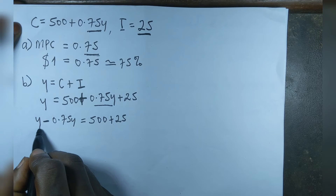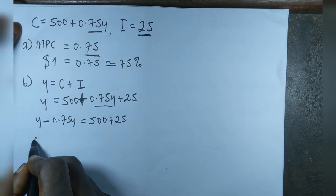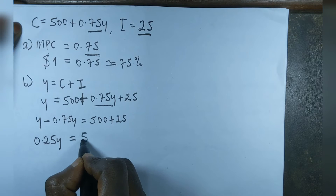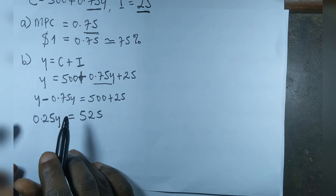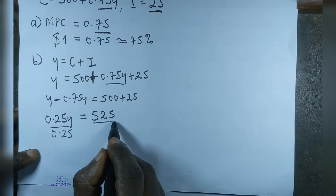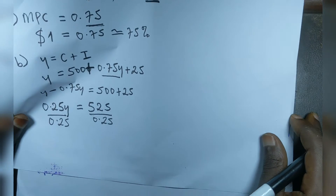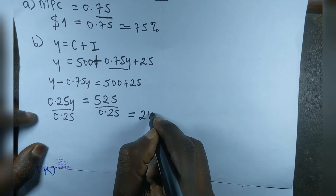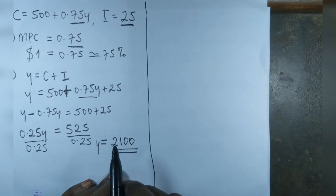The coefficient of Y is one, so we have 1 minus 0.75Y, which gives 0.25Y equal to 525. To get the value of Y, we divide both sides by 0.25, which gives us Y equal to 2100. That's our equilibrium national income.